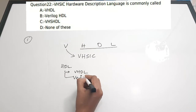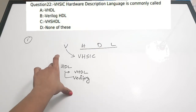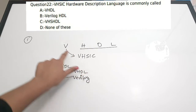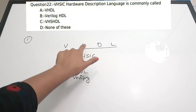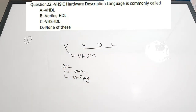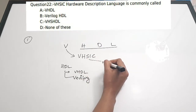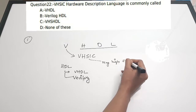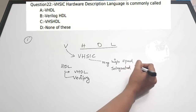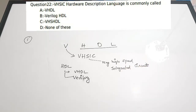The expansion of VHDL is: V stands for VHSIC, then Hardware Description Language. VHSIC means Very High Speed Integrated Circuits. So the correct answer for this question is option A.